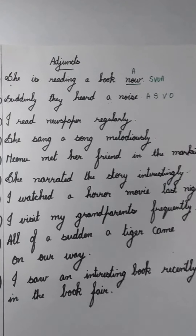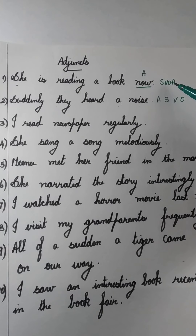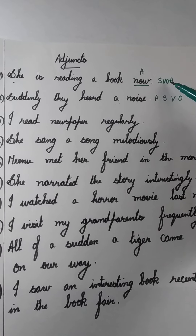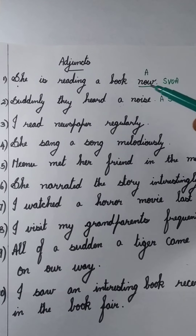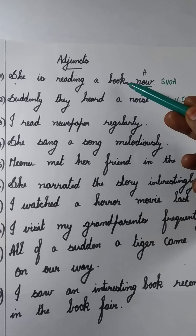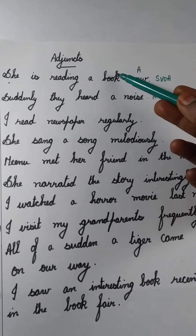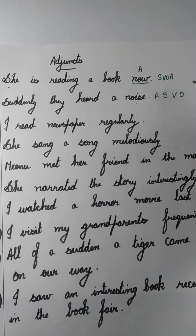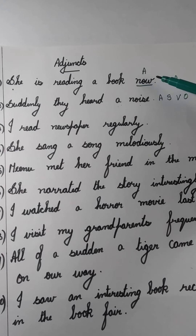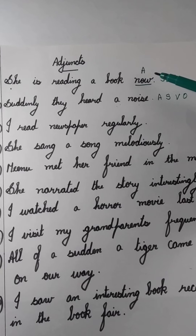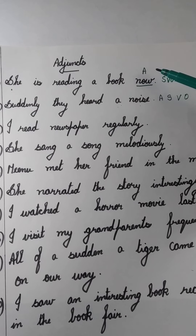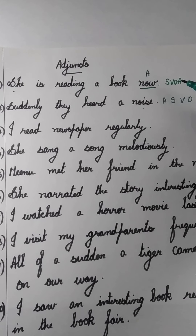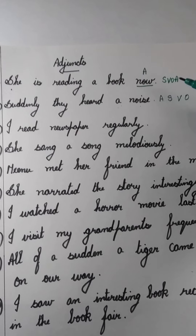For example: she is reading a book now. 'Is reading' is the verb in the sentence. The doer of this action is 'she', so 'she' is the subject. And what is she reading? She is reading a book, so that is the object. When is she reading the book? Now. So 'now' gives you only the additional information of when she is reading the book. So 'now' is the adjunct in the sentence. The sentence pattern is S-V-O-A.